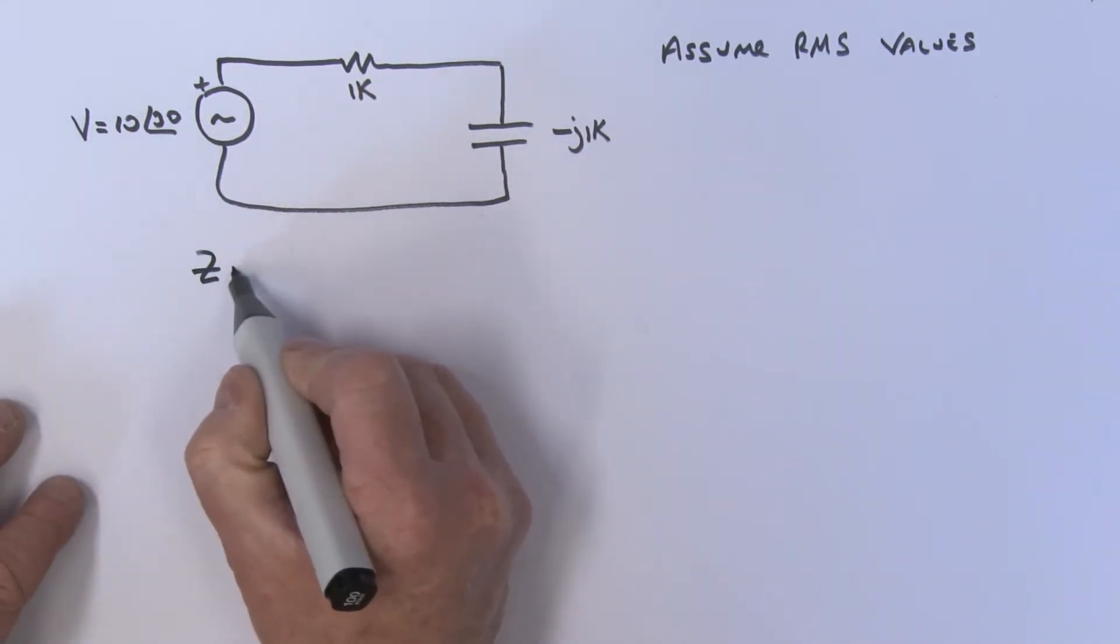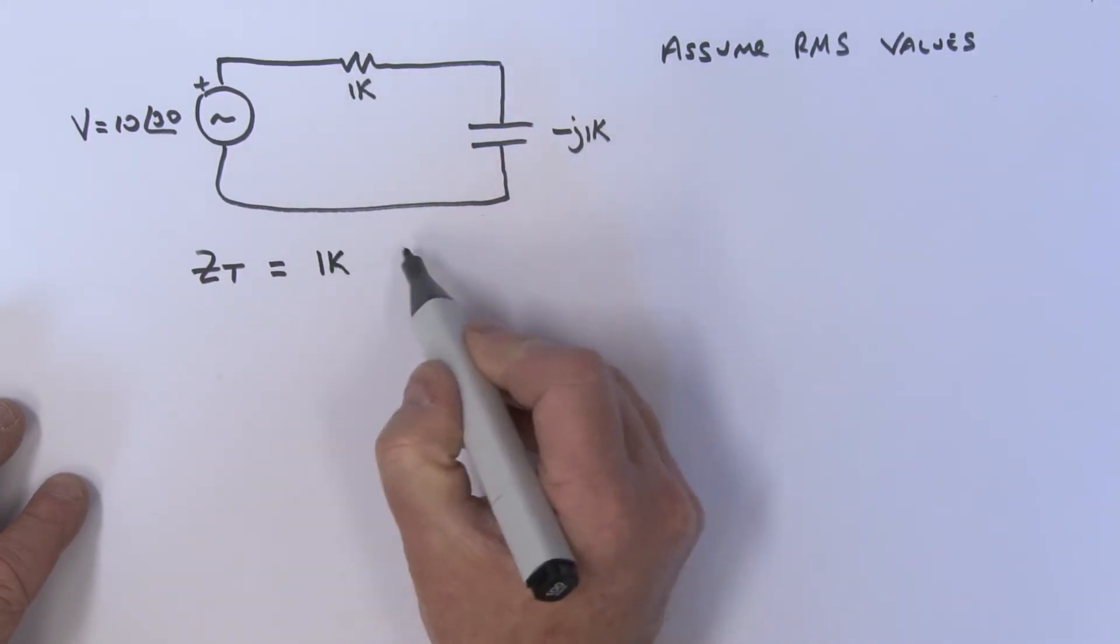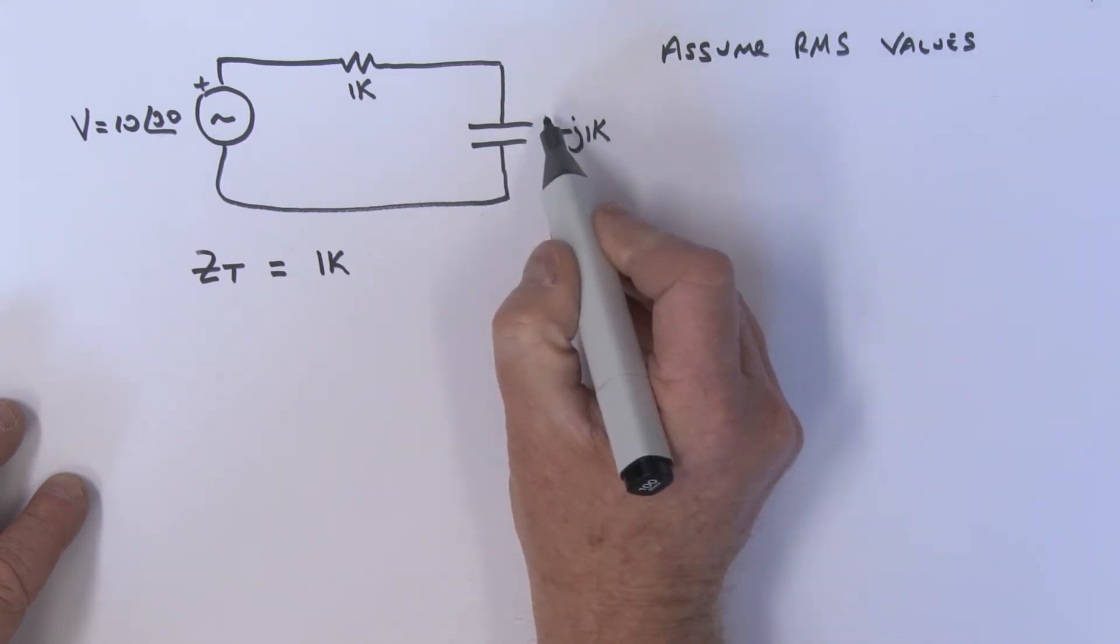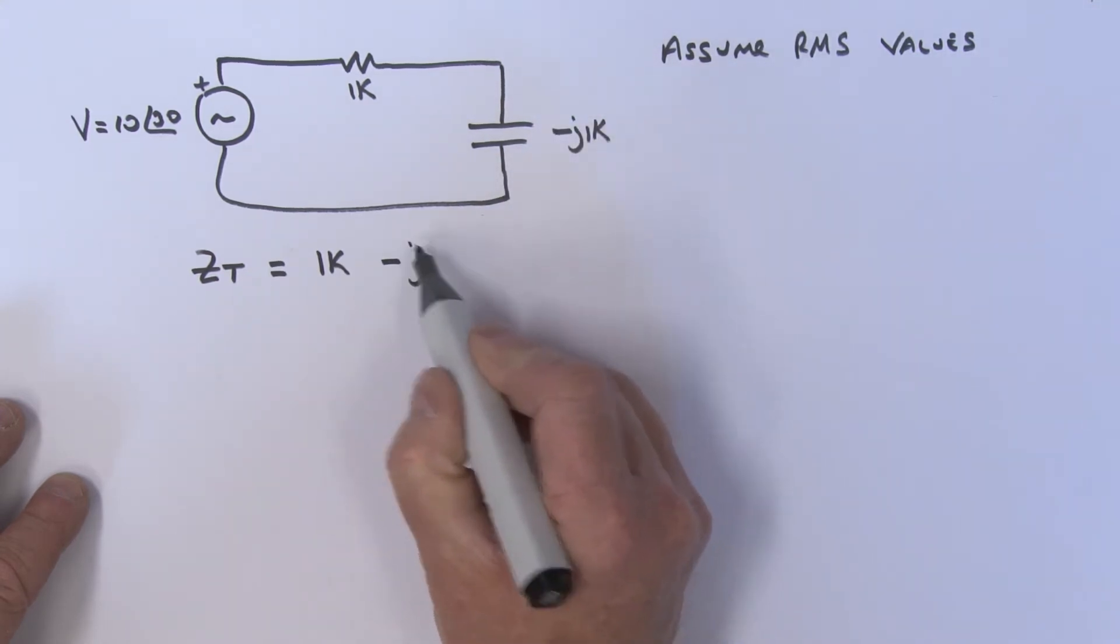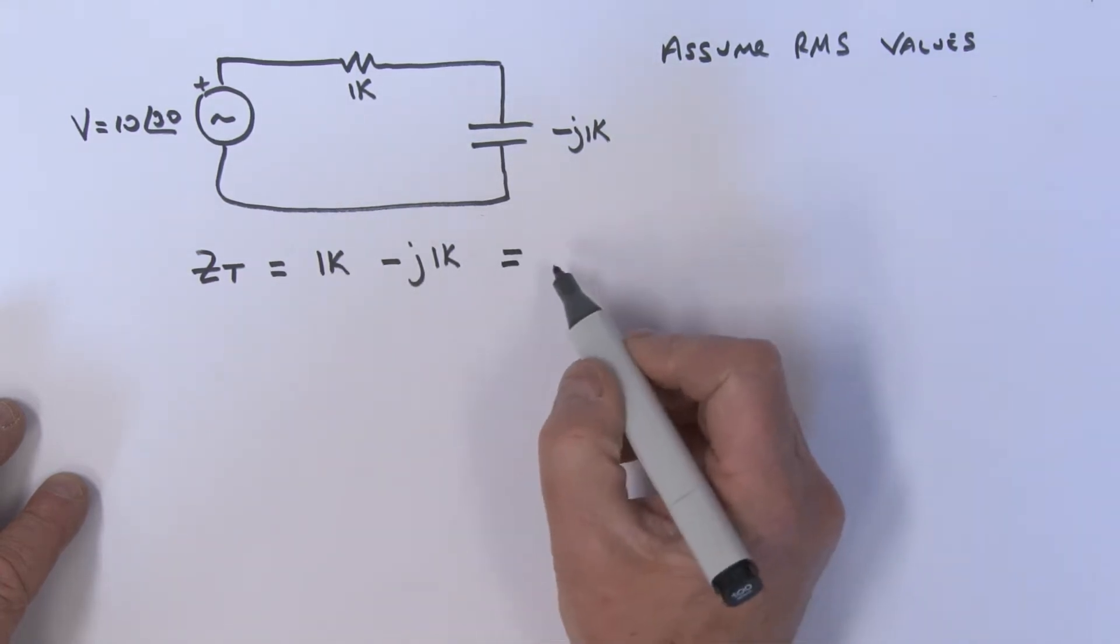We're going to call that ZT, so ZT is equal to the 1k, and then it's plus this impedance over here, which is the minus j1k. If we convert that into a polar representation, this comes out to be 1414 at an angle of minus 45 degrees.